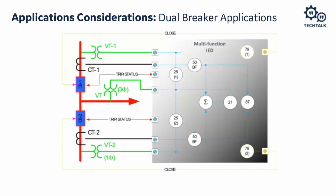The modern digital line differential relay approach has CT1 and CT2 from both breakers connected to relay terminals separately. The 87L function uses per-breaker current to develop proper restraint. Distance and overcurrent functions can still use the summed CTs. Synchrocheck and closure are done per breaker. This is the recommended approach for dual breaker applications.